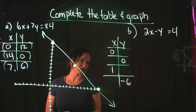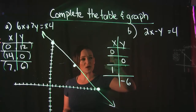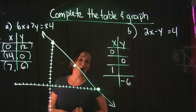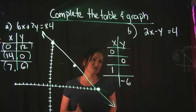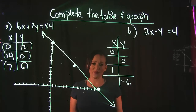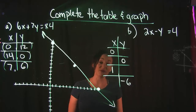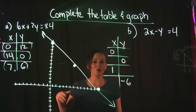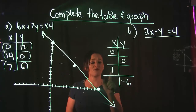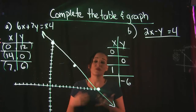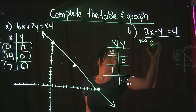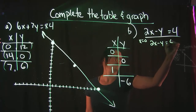In example B, our XY table has four values to find: X is 0, Y is 0, X is 1, and Y is negative 6. That means we have four missing pieces of information. Just like example A, we're going to substitute into our equation four times to find all four missing values before we can plot and graph.